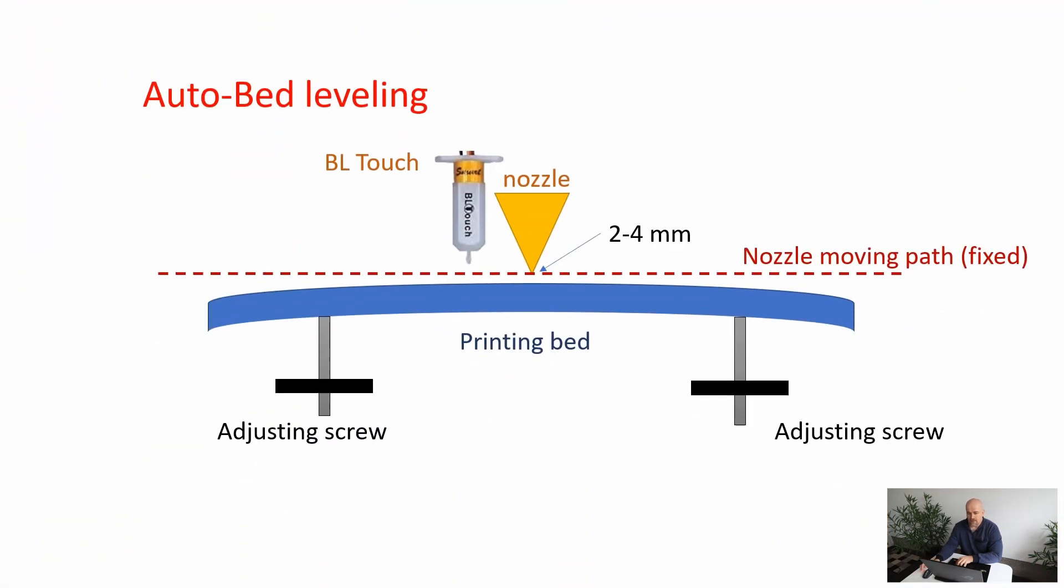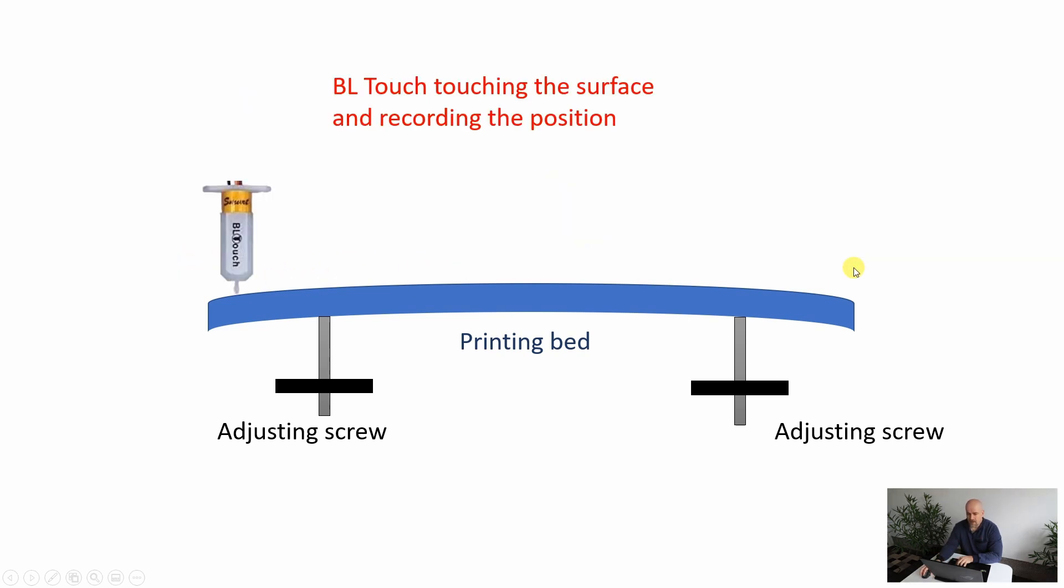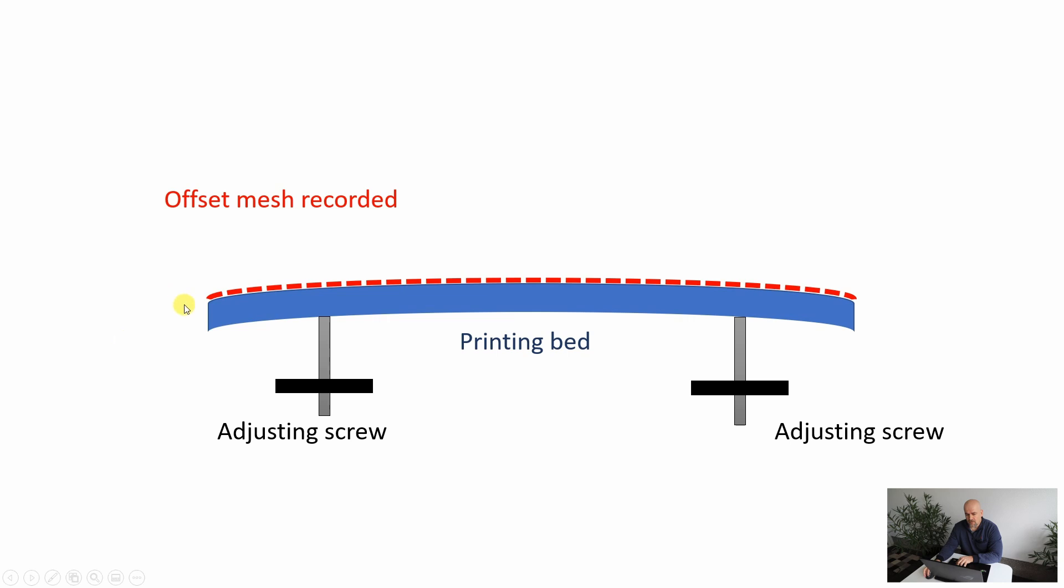Now in our case, the bed leveling process—we have this nozzle and a sensor, let's say a BL Touch, and this is the printing bed which is warped, so it's not perfectly straight. For this, the BL sensor helps. The moving path of the nozzle theoretically is still aligned, but by using this BL Touch sensor it will touch several points on the surface and create what's called an offset mesh.